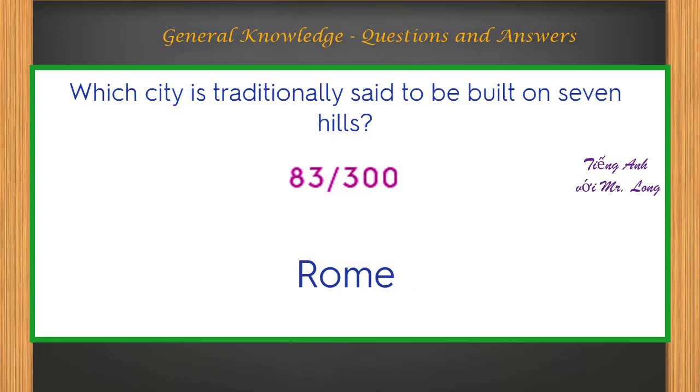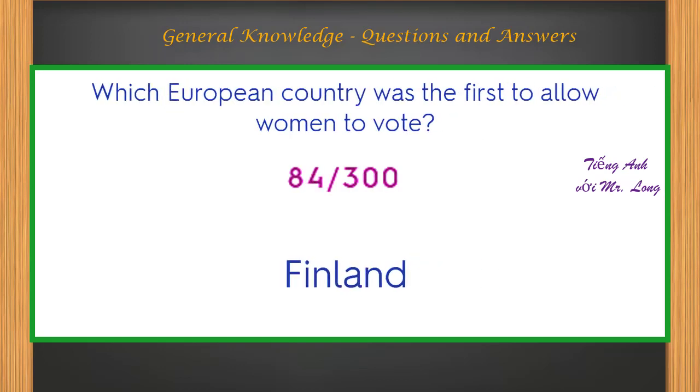Which city is traditionally said to be built on seven hills? Rome. Which European country was the first to allow women to vote? Finland.